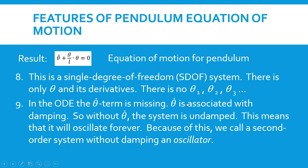Now the first order derivative is associated with damping. Damping is friction and we have a frictionless pivot point. So this system is undamped. And because there's no friction, that means once it's put into motion, it will oscillate forever. Because of this, we call this a second order system or any second order system without damping an oscillator, implying that it will oscillate indefinitely.